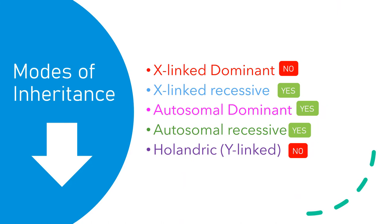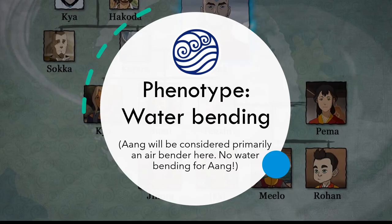So those are the modes of inheritance that worked and didn't work for the blue forehead arrow. On to phenotype number two: waterbending.